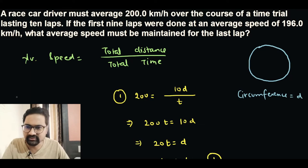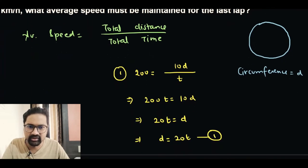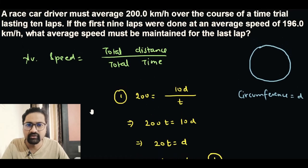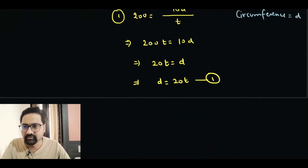Now since we have this as equation number one, let's work a little bit more and find out the equation number two, which is for the first nine laps. I'm going to do the exact same activity, but the only difference is the average speed is now 196.